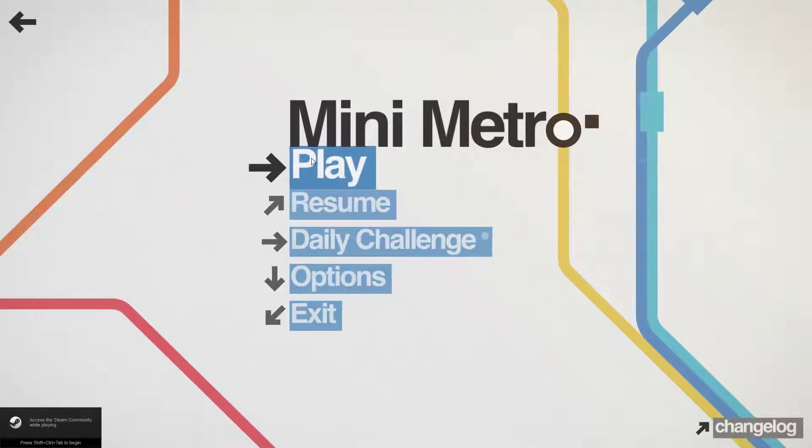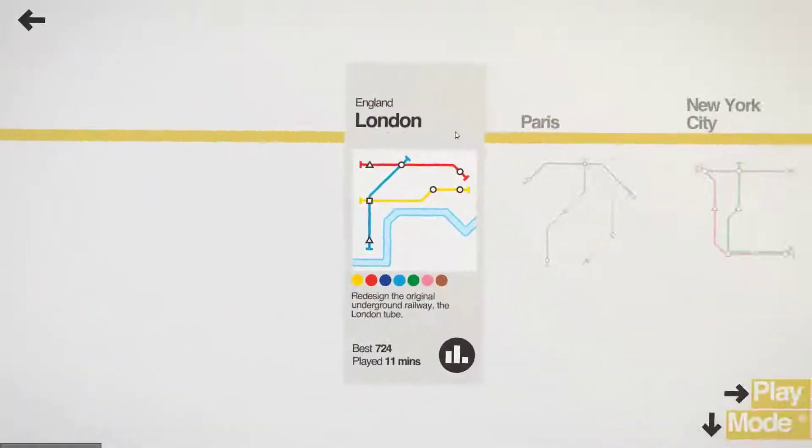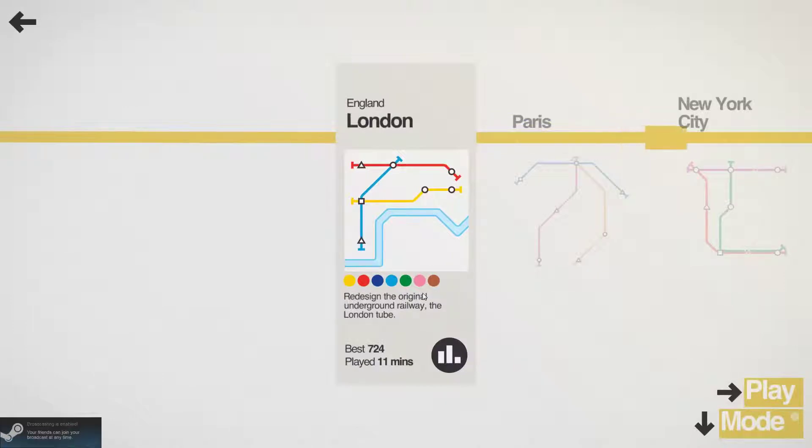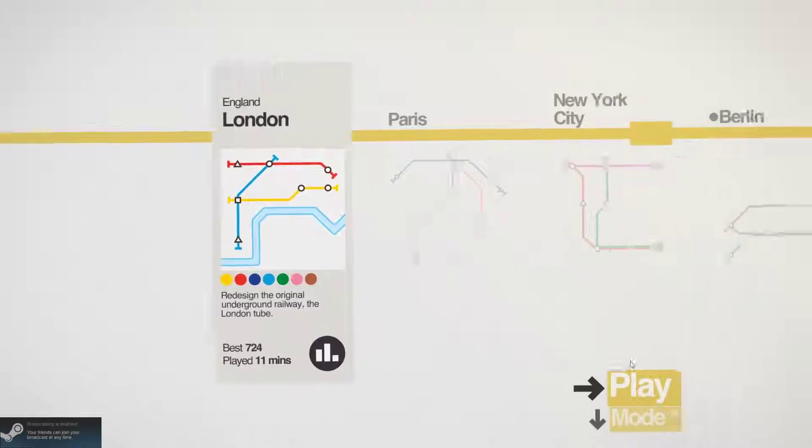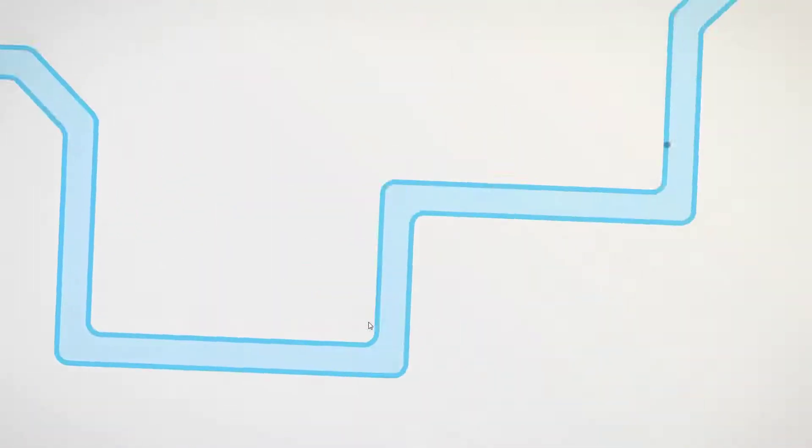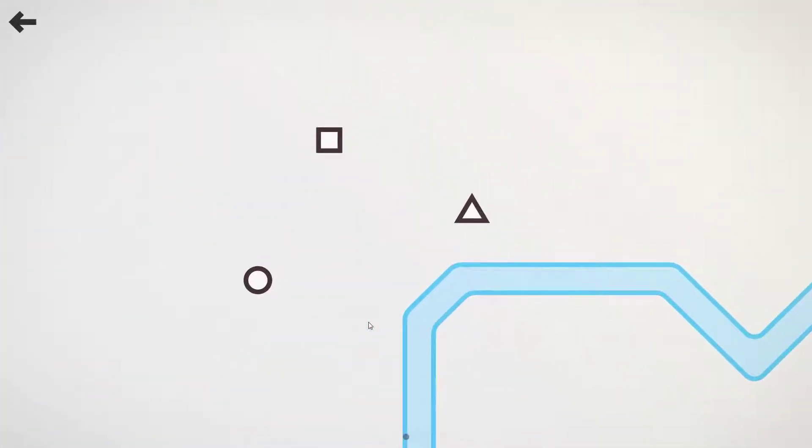This is Mini Metro, a simple little game about building underground railways. So we've got three train stations here. We're going to connect them by drawing a line up to here and here.